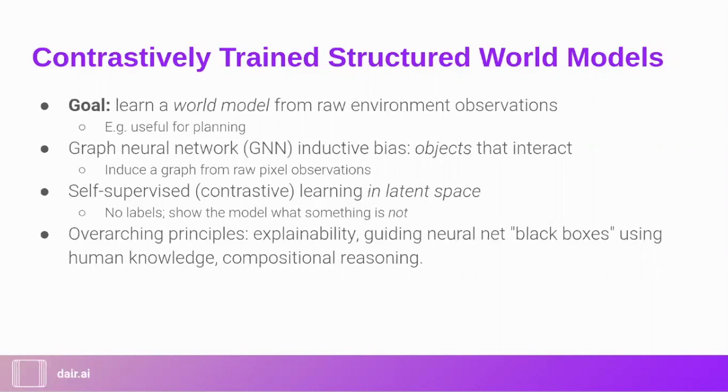So basically, they place an inductive bias over the environment and say there are some objects, these objects interact together, and then learn a representation for each of them individually. And they do that by self-supervised contrastive learning in latent space.